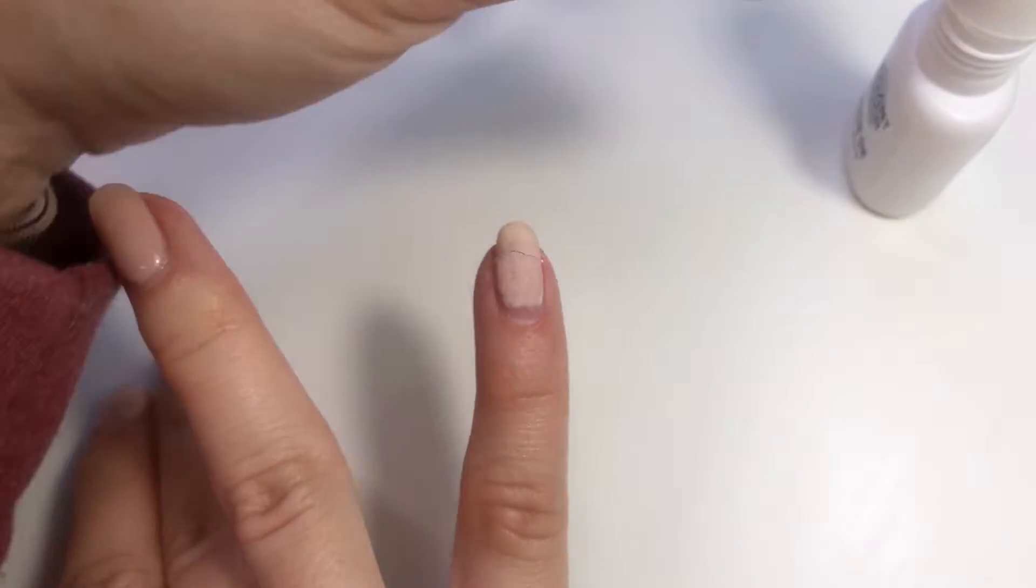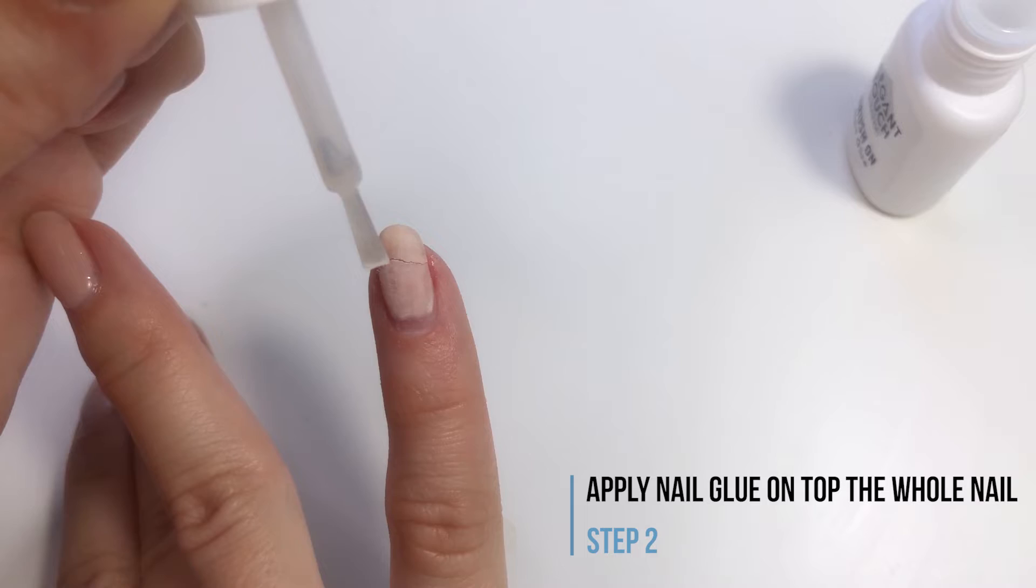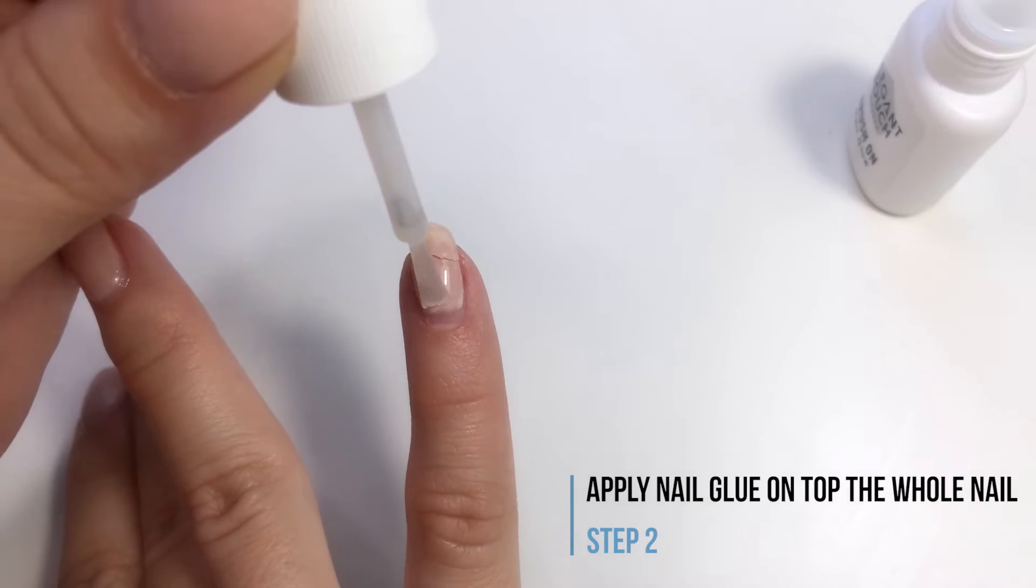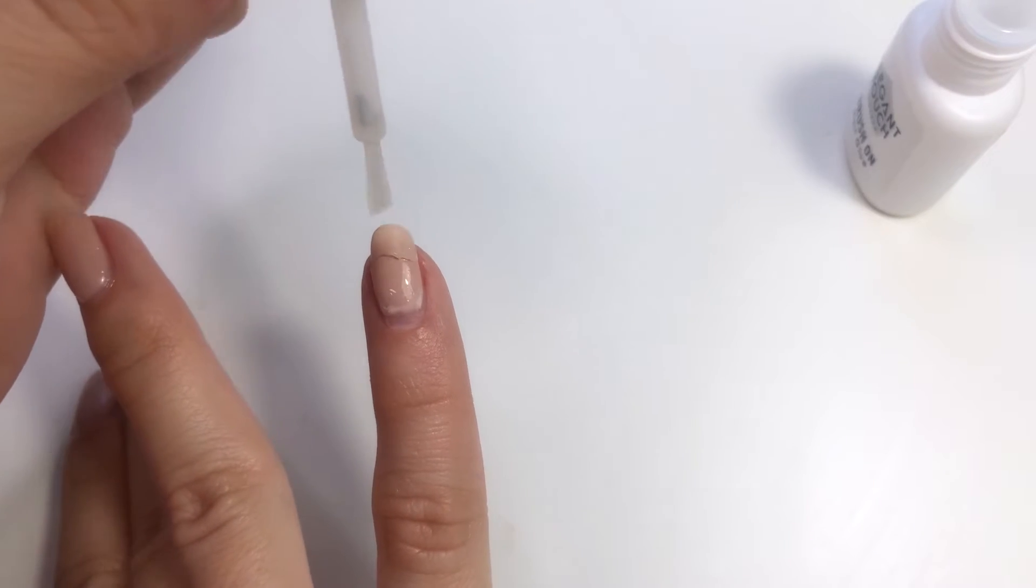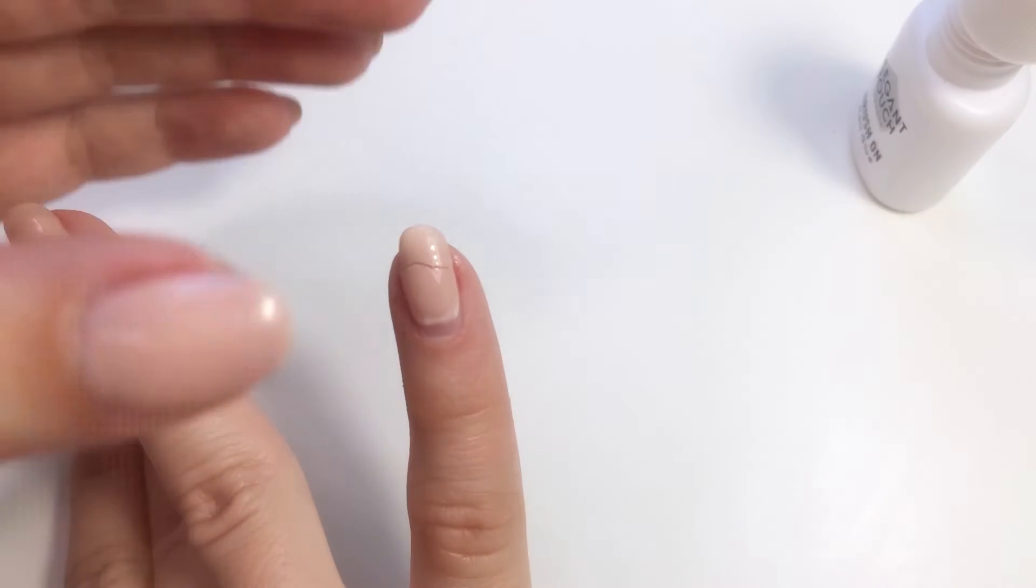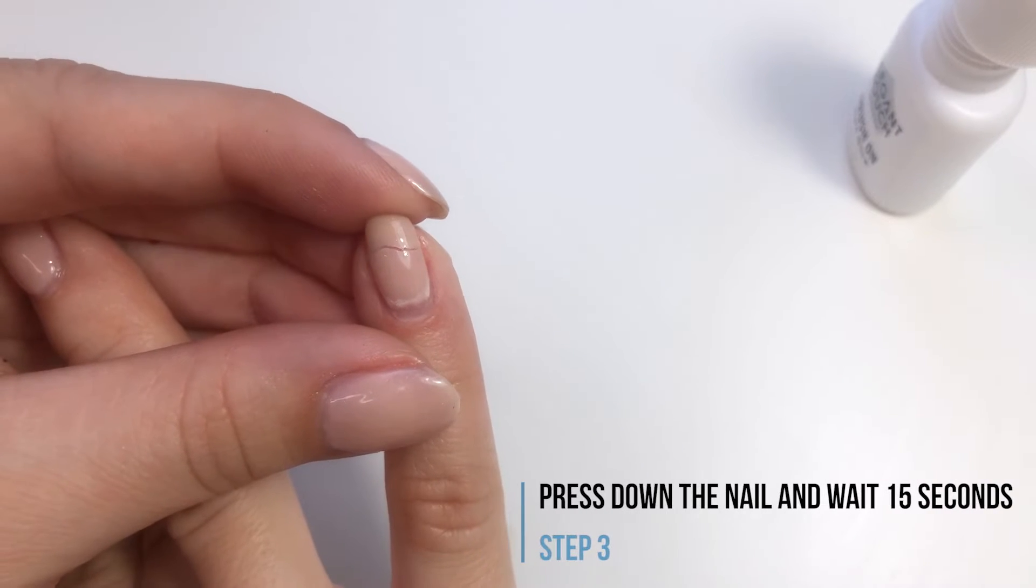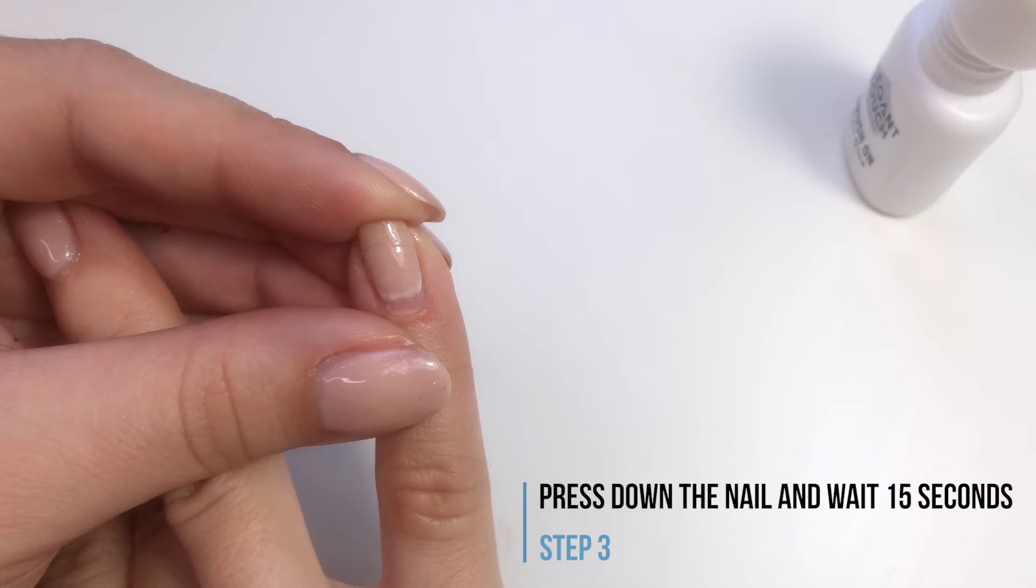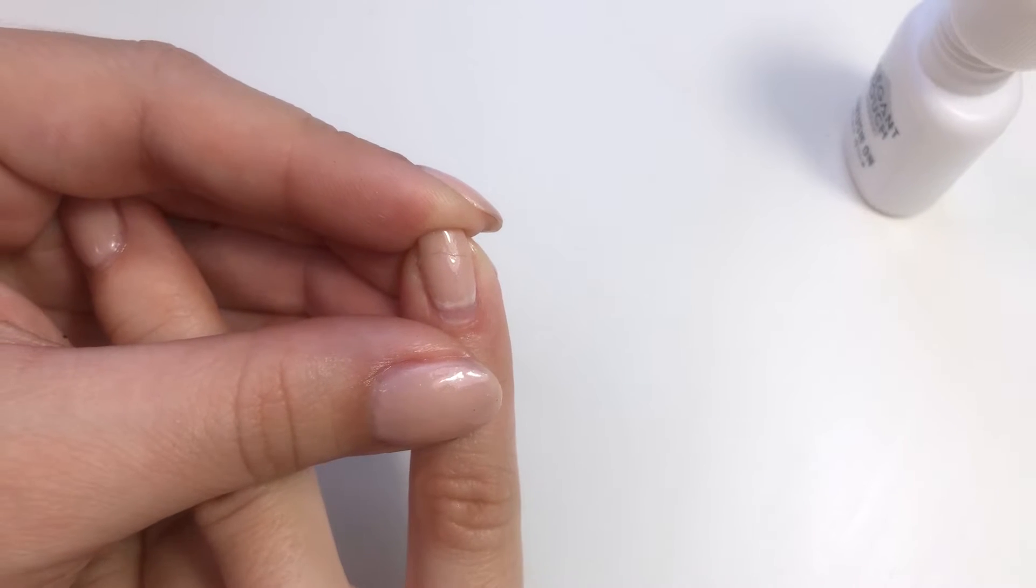Now that your whole nail is buffed you can take the nail glue and apply it on top of the whole nail. Then press down on your broken bit in order to glue it back to the actual nail.